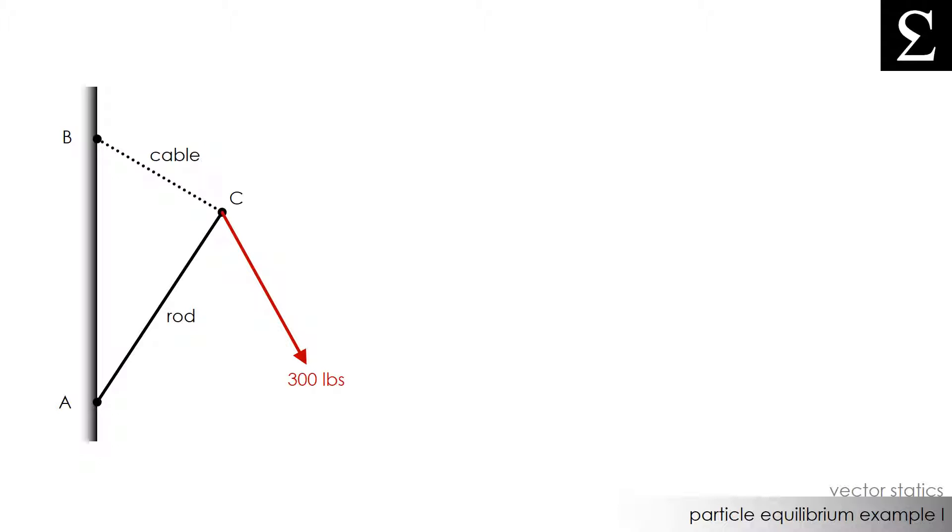We can see that the cable is pulling on point C because of a 300 pound load and that the rod is in a sense pushing on point C since it is trying to make sure the applied force does not move point C downward. The angle that the force makes with the vertical is 20 degrees and the angles at points A and B are 30 degrees and 55 degrees respectively.